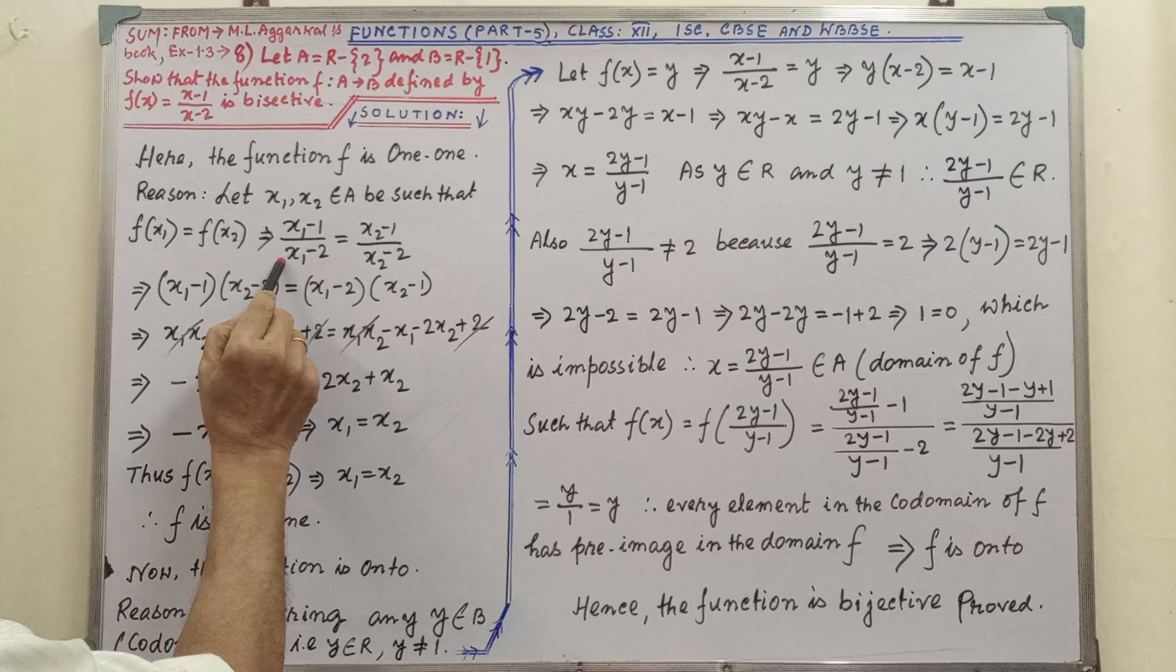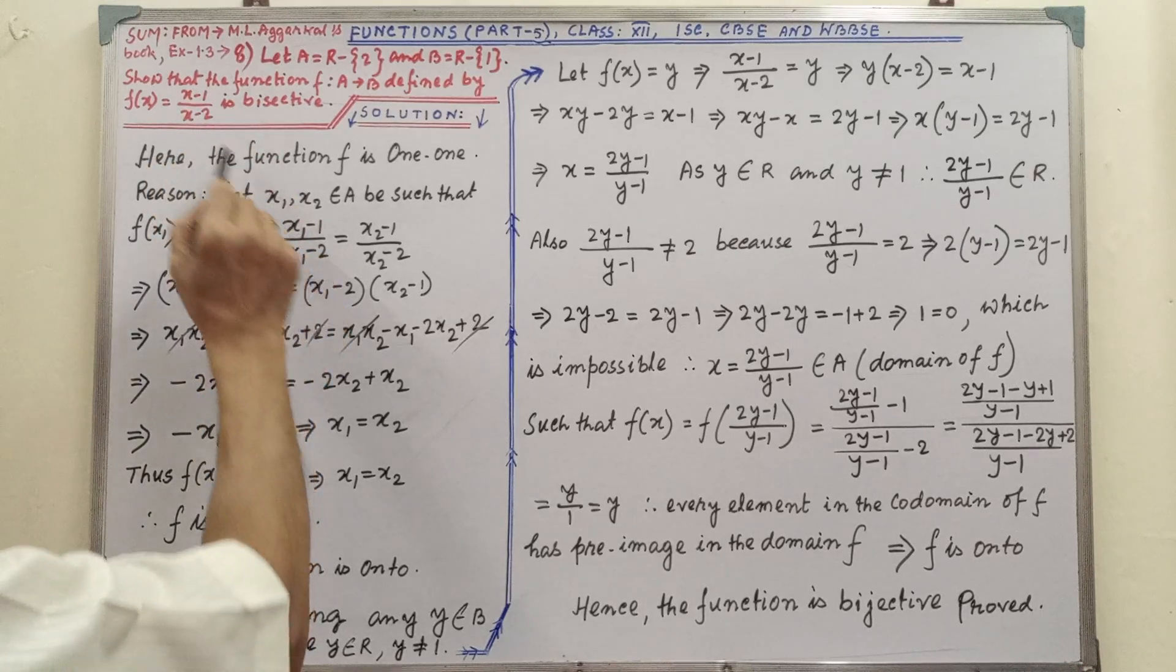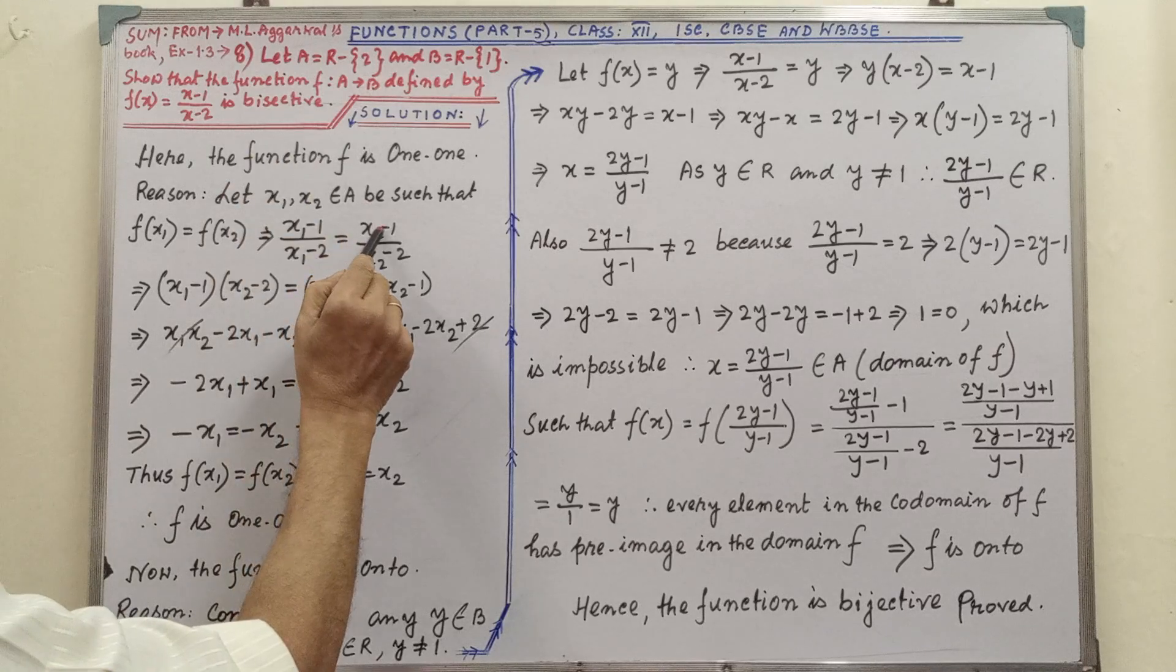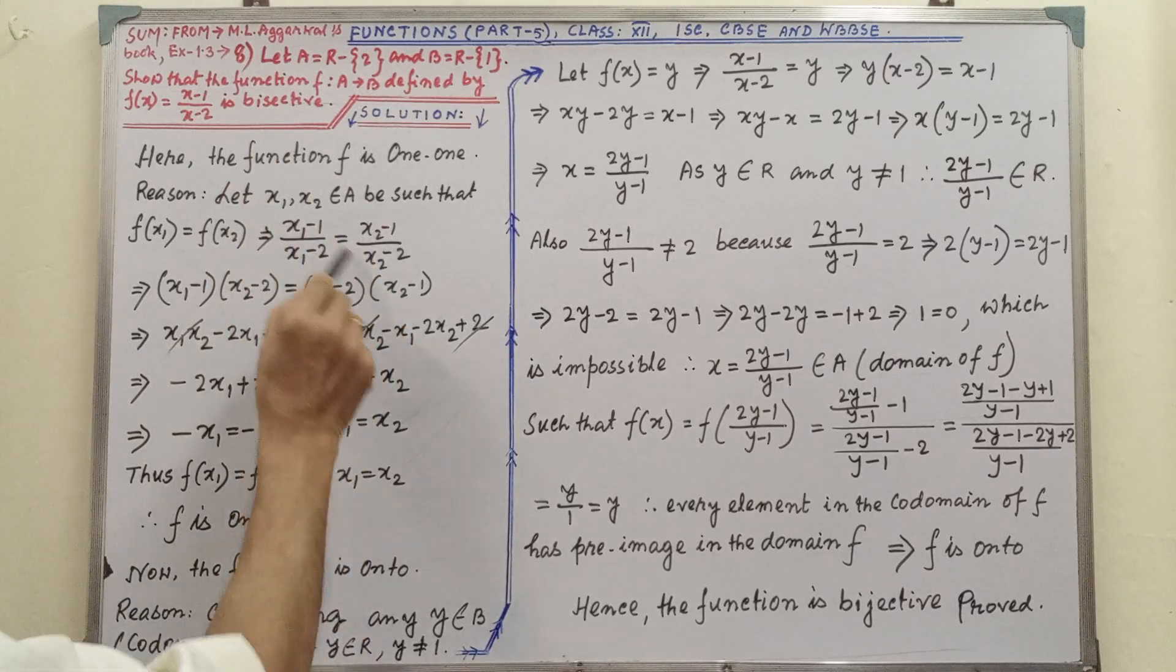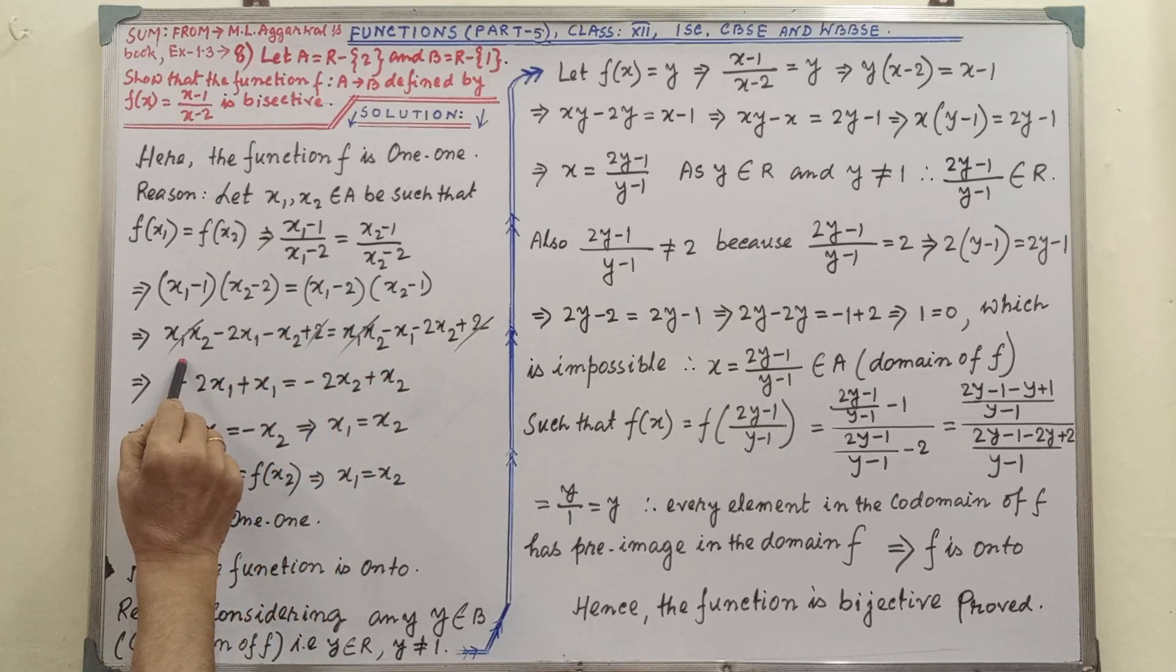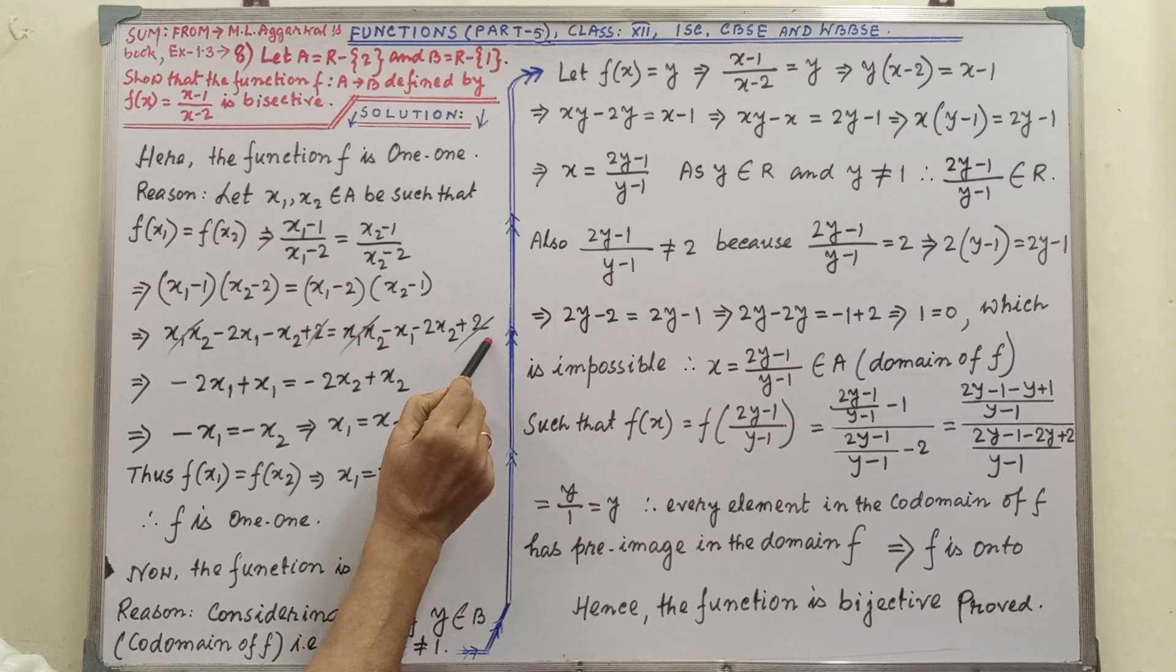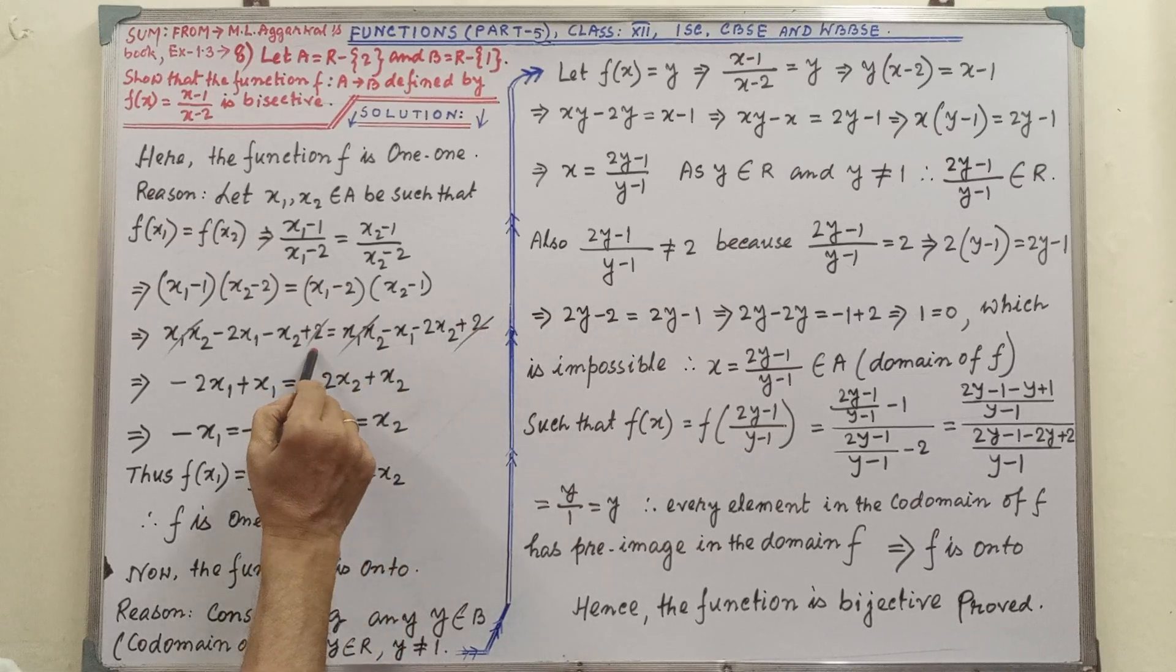in place of X we are putting X1, in place of X we are putting X2. Then by cross multiplication we are getting this, then simple multiplication, by simple multiplication we are getting this, then plus 2, plus 2, plus X1, X2, plus X1, X2.